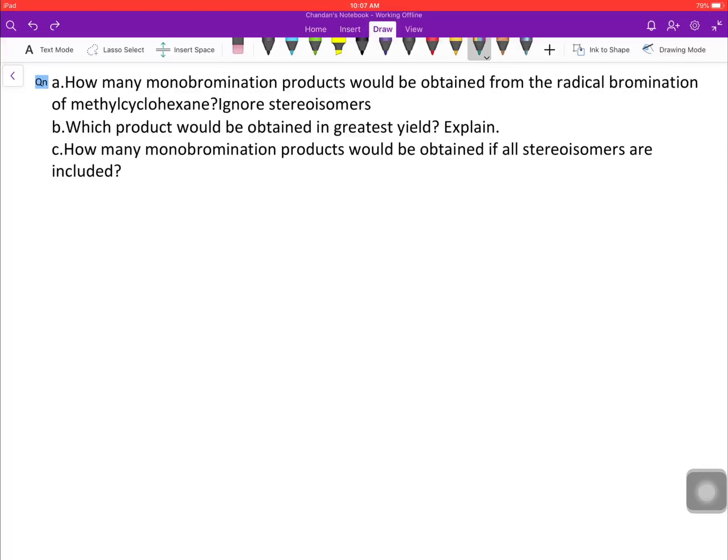Hello everyone, good morning. Let's solve a problem based on bromination. The question is: how many monobromination products would be obtained from the radical bromination of methylcyclohexane? Ignore stereoisomers. Second part: which product would be obtained in greatest yield? Explain. Third: how many monobromination products would be obtained if all stereoisomers are included?